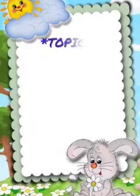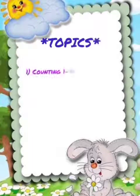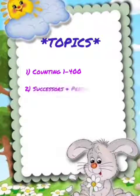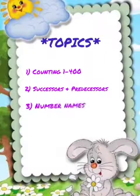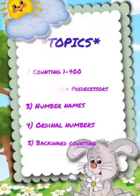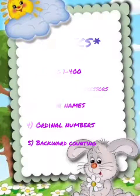Today's topics are: counting 1 to 400, successors and predecessors, number names, ordinary numbers, and our last topic is backward counting.